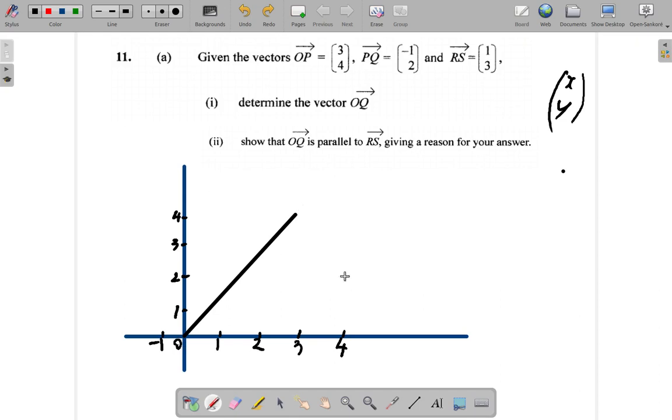So what you have is OP. P ends up right here. It's above 3 and beside 4 because it's (3, 4).